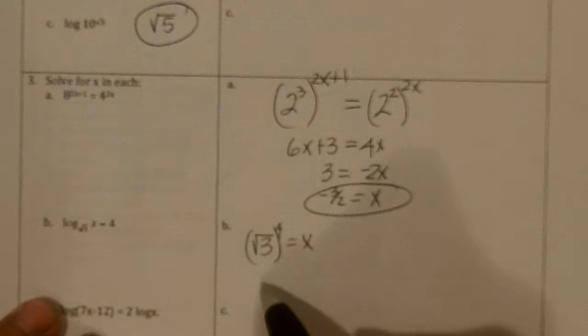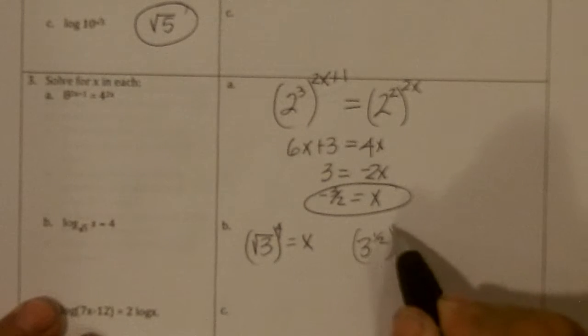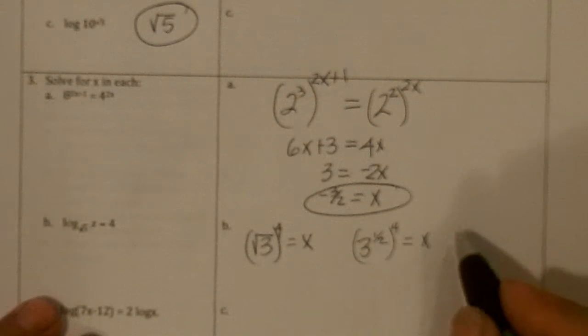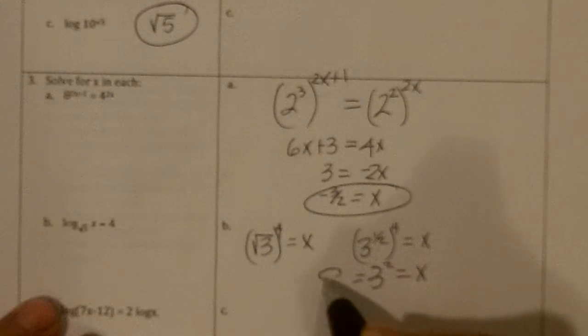But square root is the 1 half power, so we have 3 to the 1 half to the 4th equals x. You multiply powers, and so we get 3 squared is x, and 3 squared is 9.